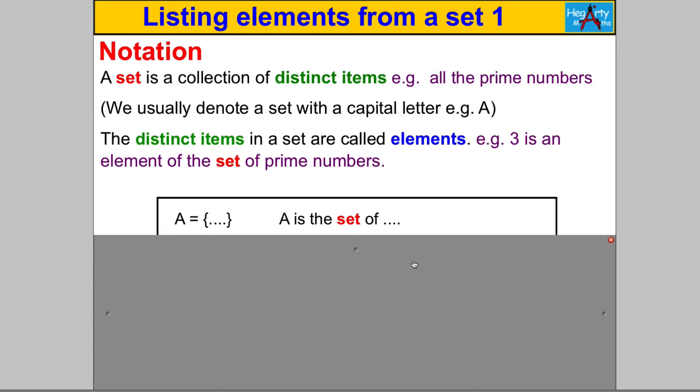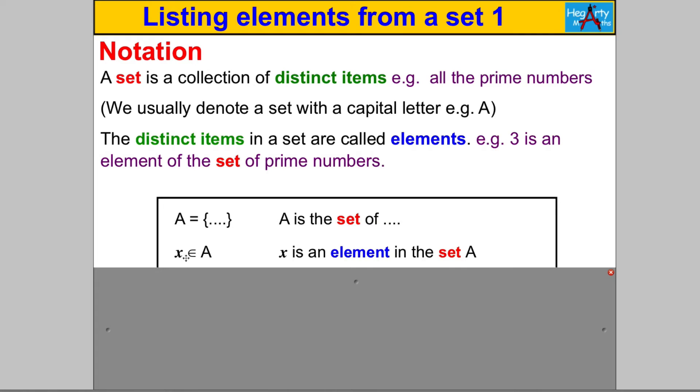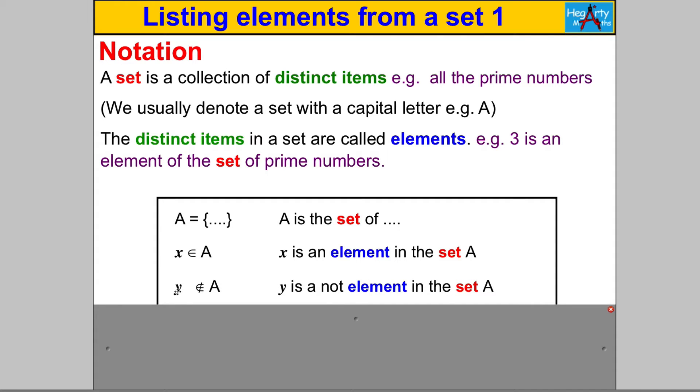If you see something like little x, this symbol ∈, that just means x is an element in the set A. X is a member of A, x is within this set A. If you see this symbol here, for example y with this symbol ∉ in A, that means y is not an element in the set A, is not in A.